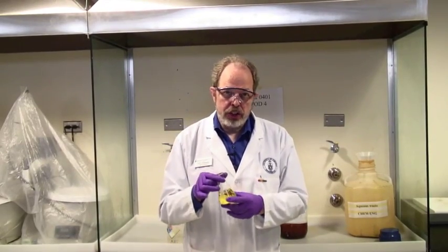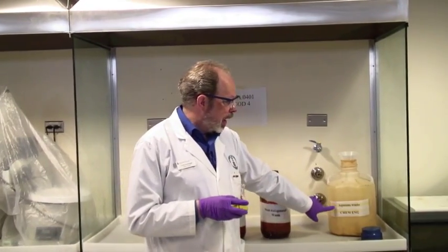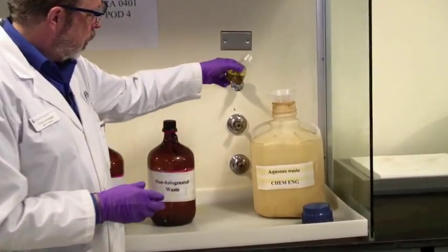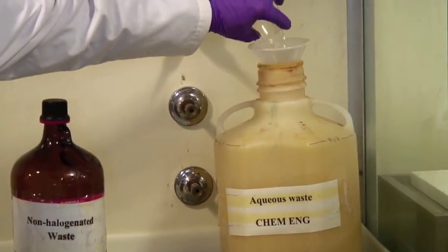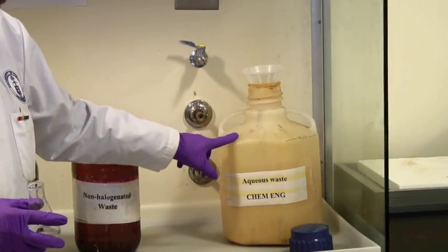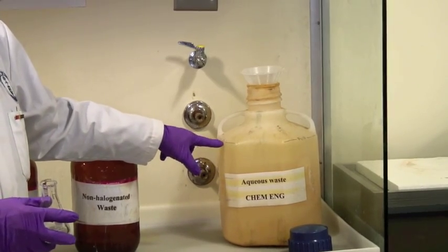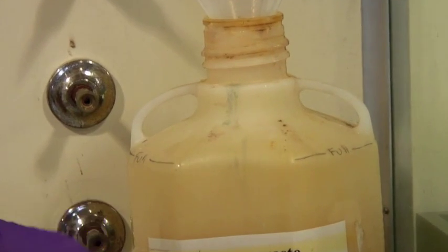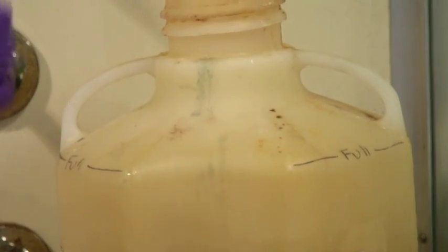Waste from a titration needs to go into the aqueous waste bin. There'll be a funnel on top. When you're done, just pour it in. That's all you need to do. Notice that there is a full line on the waste bottle. If the liquid gets above this line, do not put any more in. Speak to a staff member. We will get you a fresh waste bottle, but do not overfill the waste bottle.